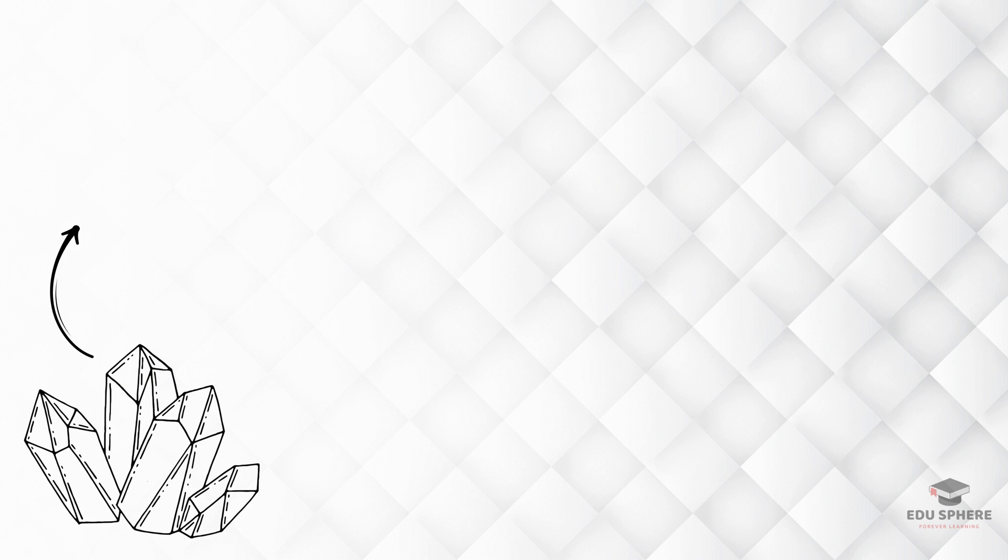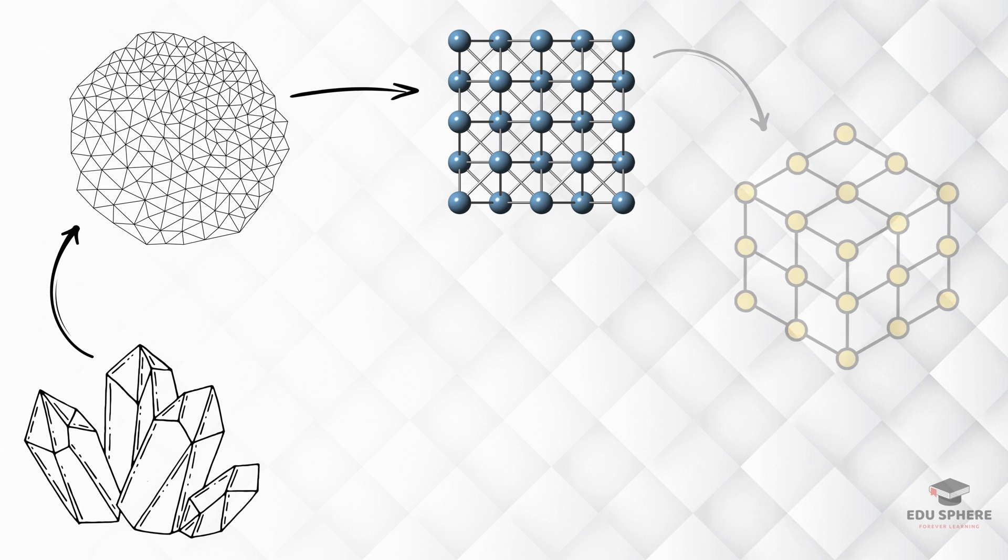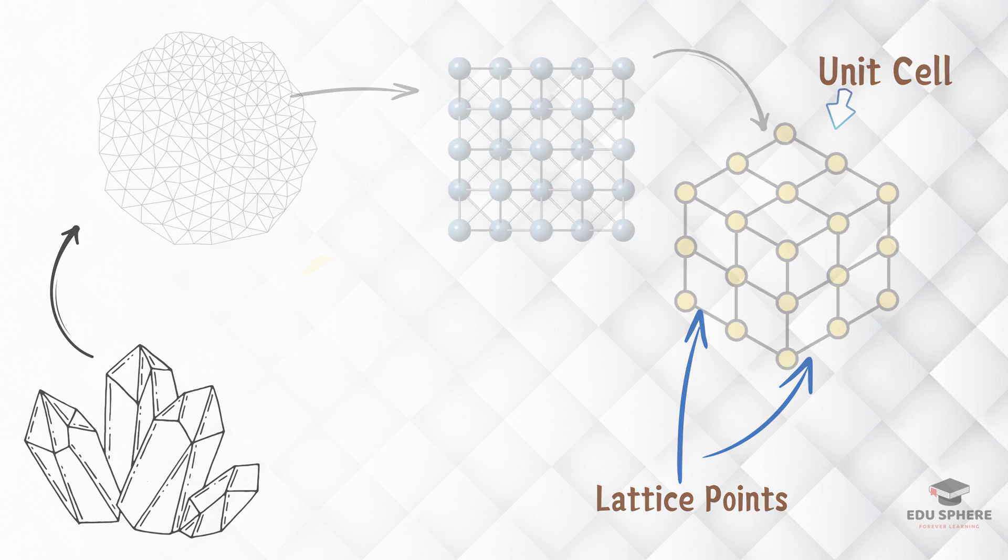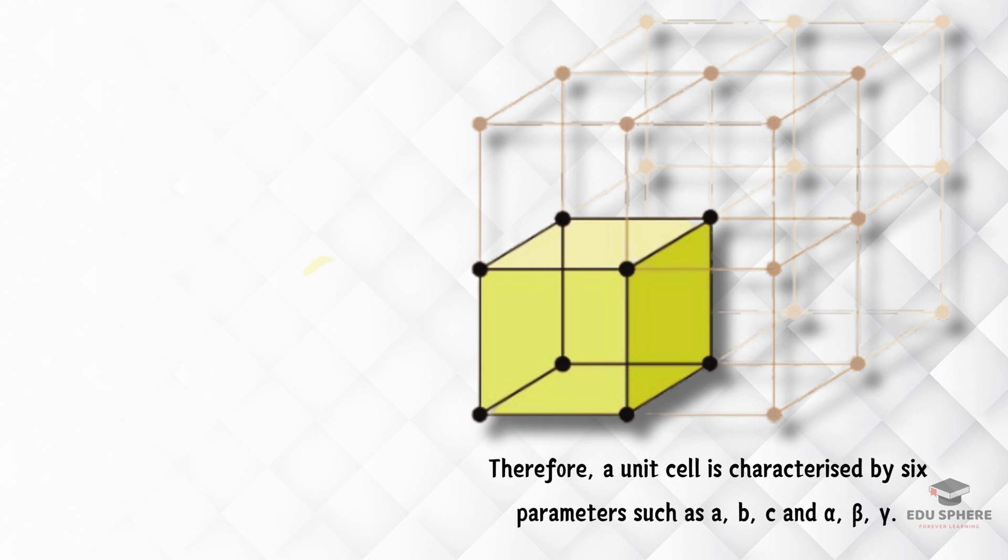In crystals, atoms or ions arrange themselves in a repeating pattern. The smallest repeating unit of this pattern is called a unit cell. Each unit cell contains specific positions called lattice points, where these atoms or ions can be found. As shown in the figure, the entire crystal structure is formed by the repeated arrangement of these unit cells in three dimensions.